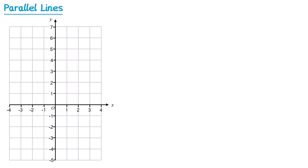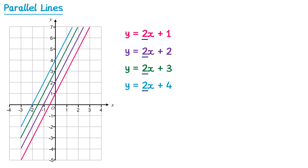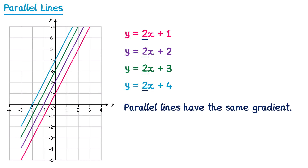In the previous video we looked at the graphs of these four equations. Notice how all of these graphs have the same gradient of 2. When you draw the graphs they look like this — you can see that the graphs of these equations all form parallel lines. None of those lines are ever going to meet or cross, and that is because they have the same gradient. So from this we can tell that parallel lines have the same gradient. This is a useful fact that we can use to solve some problems.